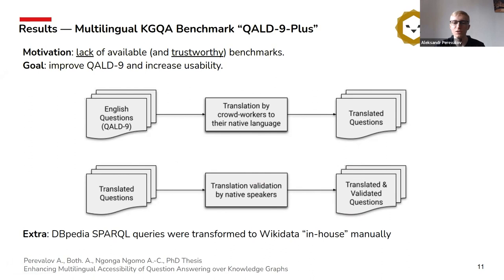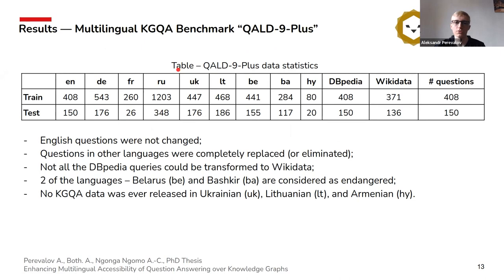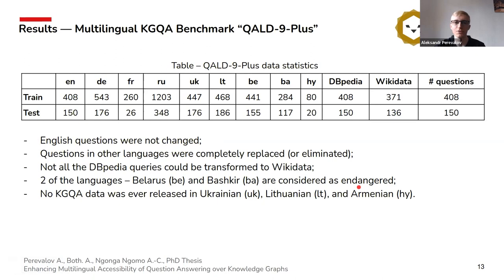The following languages were obtained after our work: German, French, Russian, Ukrainian, Lithuanian, Belorussian, Bashkir, and Armenian. English questions were not changed. Questions in other languages from the original QALD-9 were completely replaced or eliminated because the quality was not good. Two main highlights of our dataset are that Belorussian and Bashkir languages are considered endangered by UNESCO, so we provide the benchmark with endangered languages. Additionally, no knowledge graph question answering data had ever been released in Ukrainian, Lithuanian, and Armenian languages.